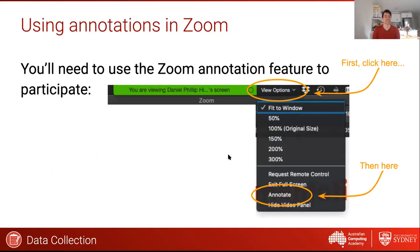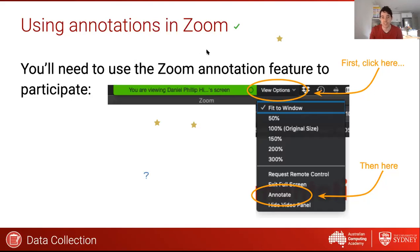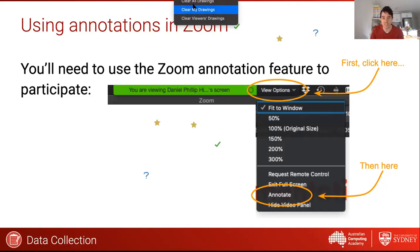So if you know how to use Zoom annotations, that's great because that's what we're going to be doing. Jump to the view options at the top of your Zoom window and go down to annotate. If you can go to the stamp tool, that's probably the best thing to use for the next activity. Have a go at stamping on the page so I know that some of you have got it before we move on to the next slide. We've got a bunch of stamps appearing — excellent.